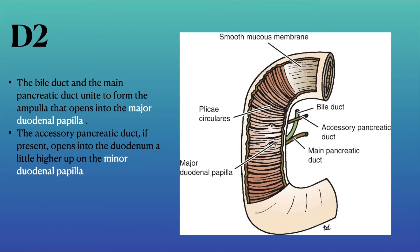The bile duct and the main pancreatic duct unite to form the ampulla, which opens into the major duodenal papilla. The accessory pancreatic duct, if present, opens into the duodenum a little higher up on the minor duodenal papilla.